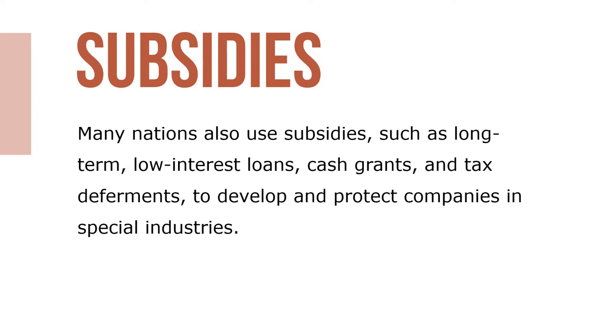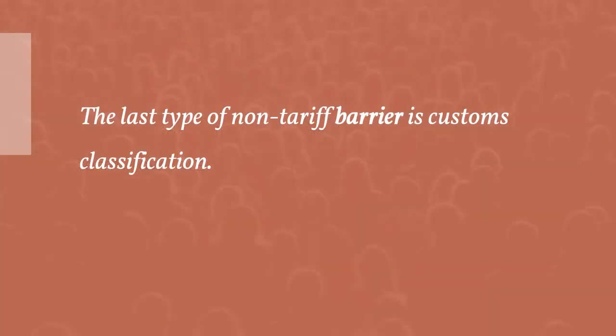Many nations also use subsidies such as long-term, low-interest loans, cash grants, and tax deferments to develop and protect companies in special industries. The last type of non-tariff barrier is customs classification. As products are imported into a country, they are examined by customs agents who must decide which of nearly 9,000 categories they should be classified under.